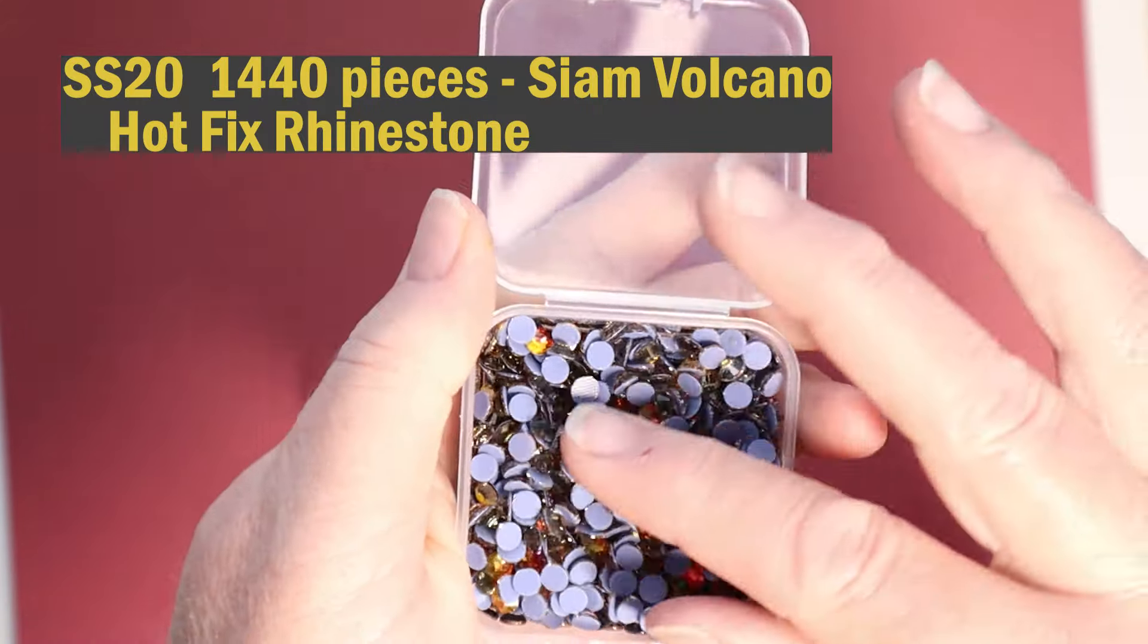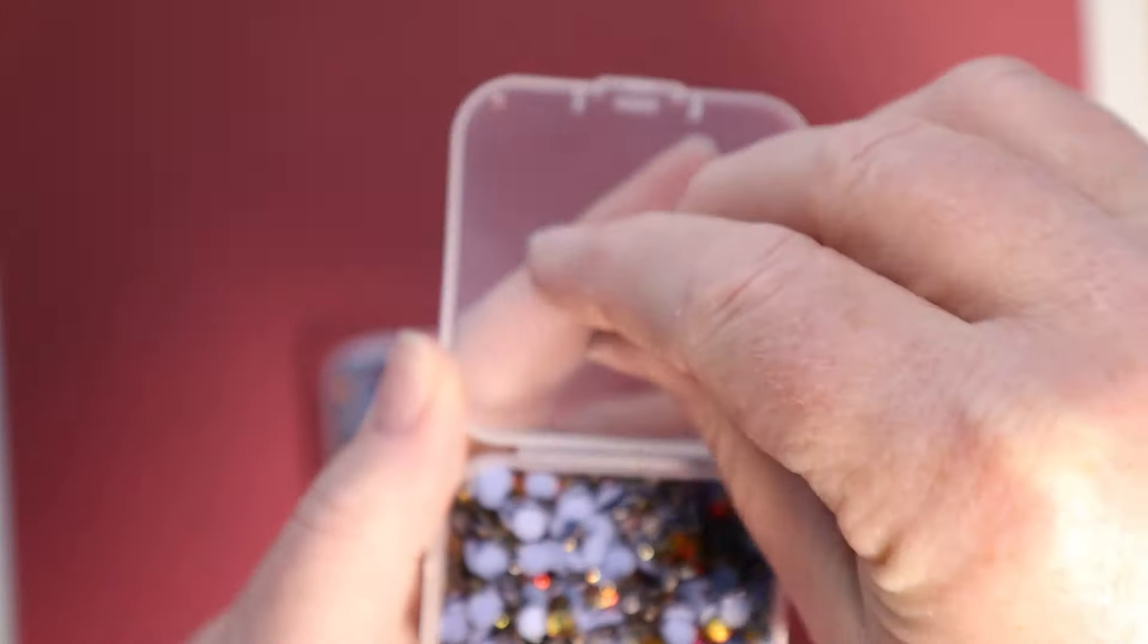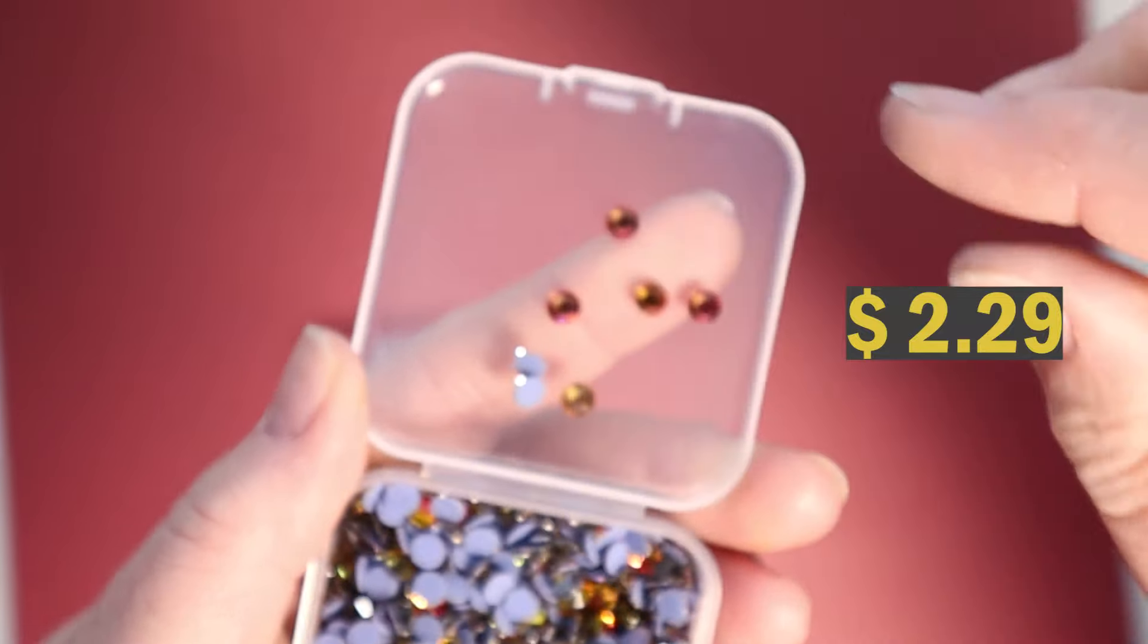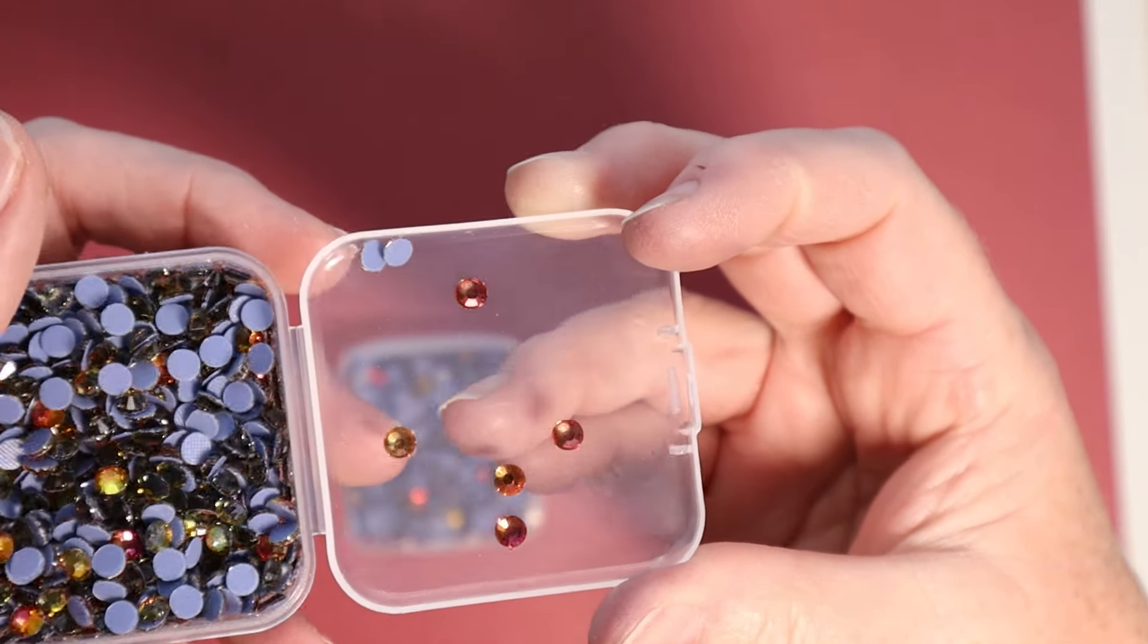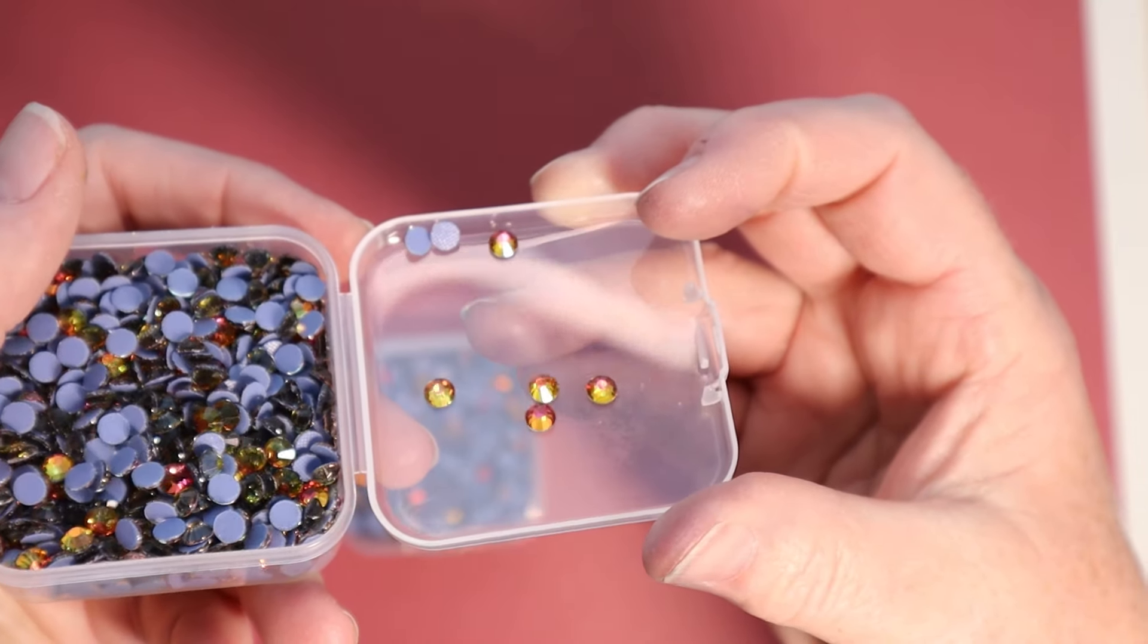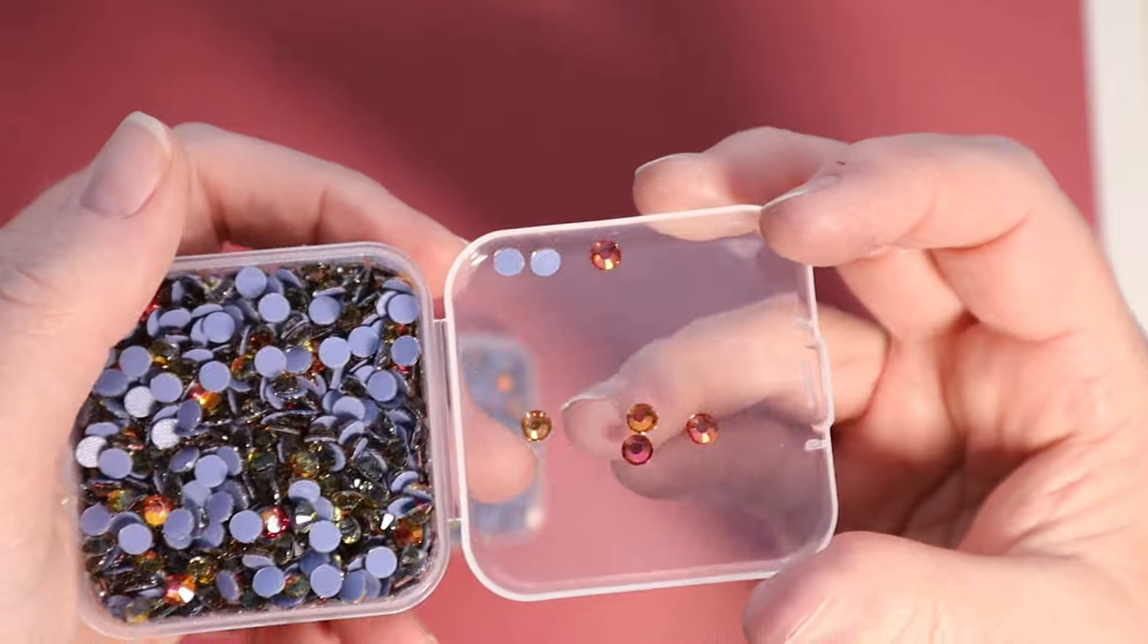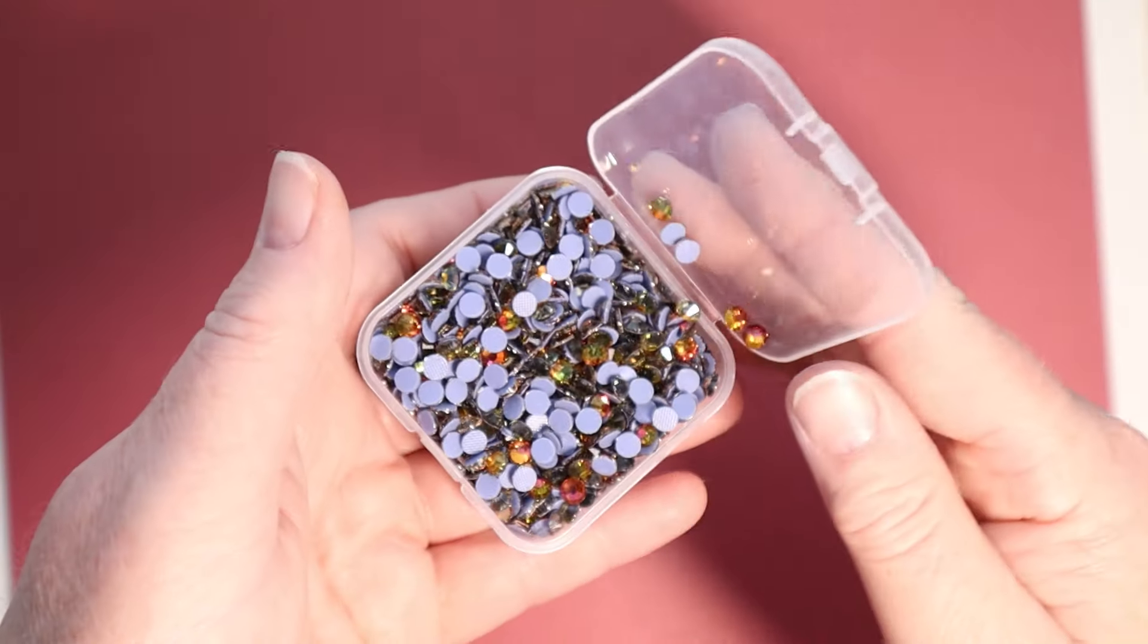These are so gorgeous. These are volcano hot fix. So you can either iron them on either fabric or you can glue them onto a project. So either or on these, these sparkle from yellow to an orange to a red, the color is vibrant on these.